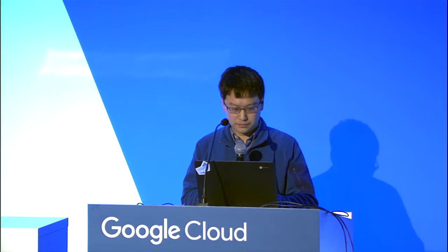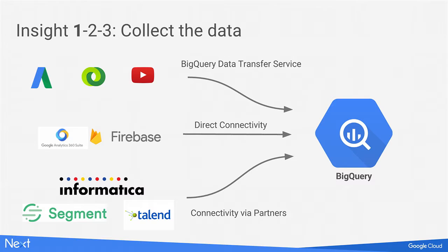We've identified three steps to insight. The first step is collecting all the data in one place. With the BigQuery Data Transfer Service, you can get AdWords, DoubleClick for Publishers, DoubleClick Bidding Campaign Manager, and YouTube into BigQuery. With Google Analytics, they have direct connectivity into BigQuery as well. For non-Google data sources, you can work with partners such as Informatica, Segment, and Funnel to get your Salesforce, Facebook, and Marketo data into BigQuery.